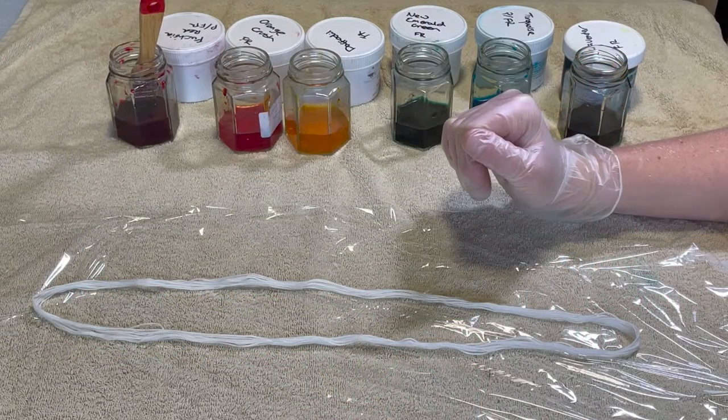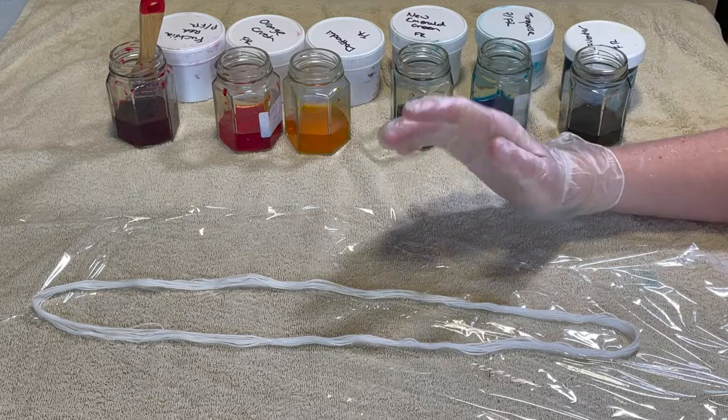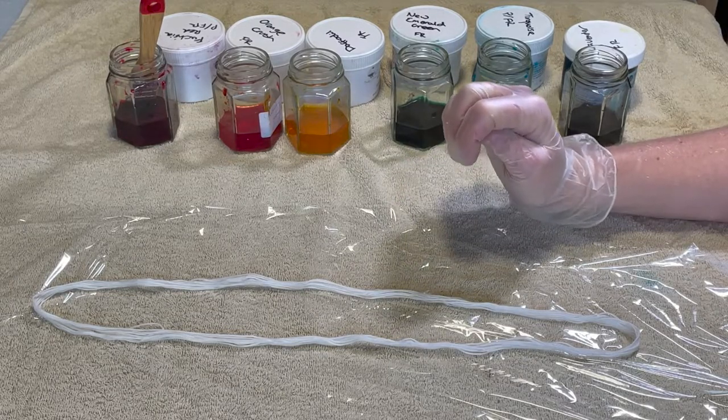Hi everybody, I'm Amy from From the Cauldron and in today's episode of Dye Time I'm going to be dyeing this six-stranded cotton floss.